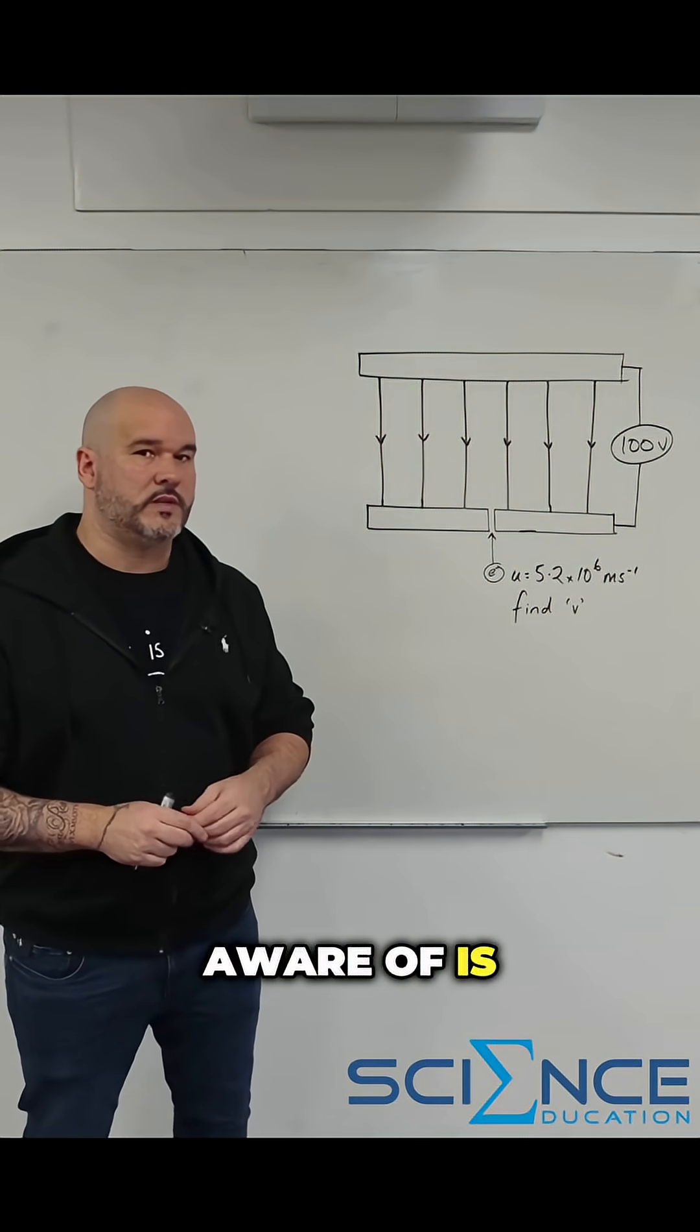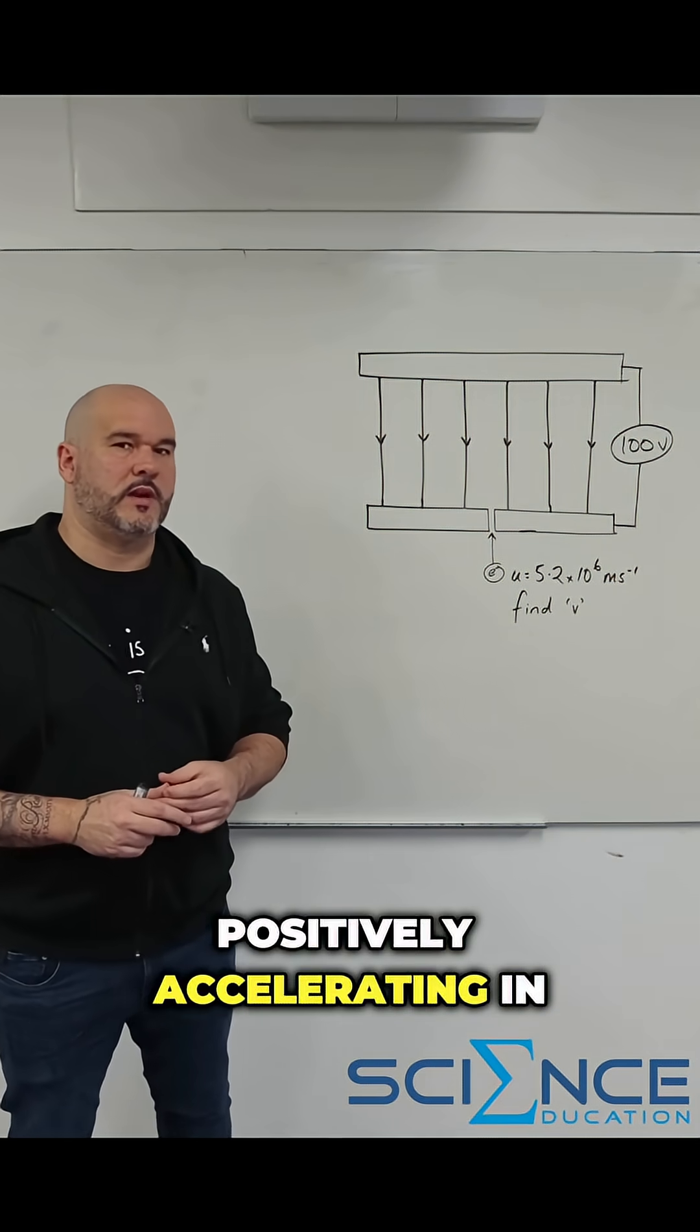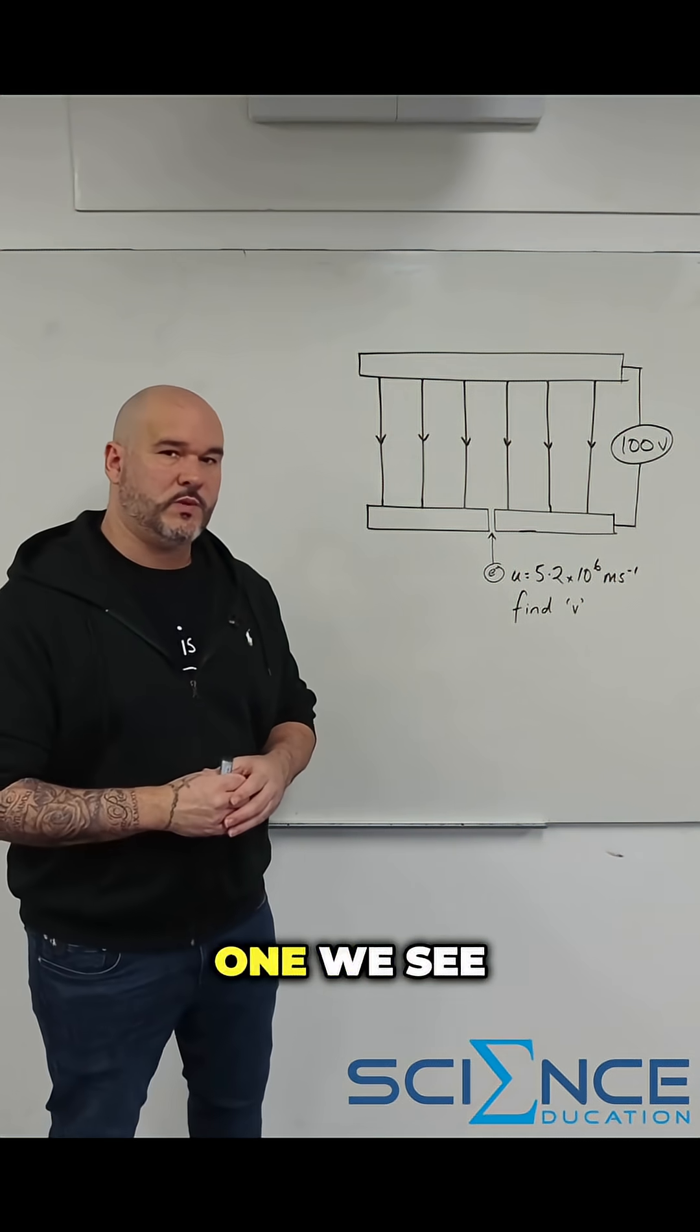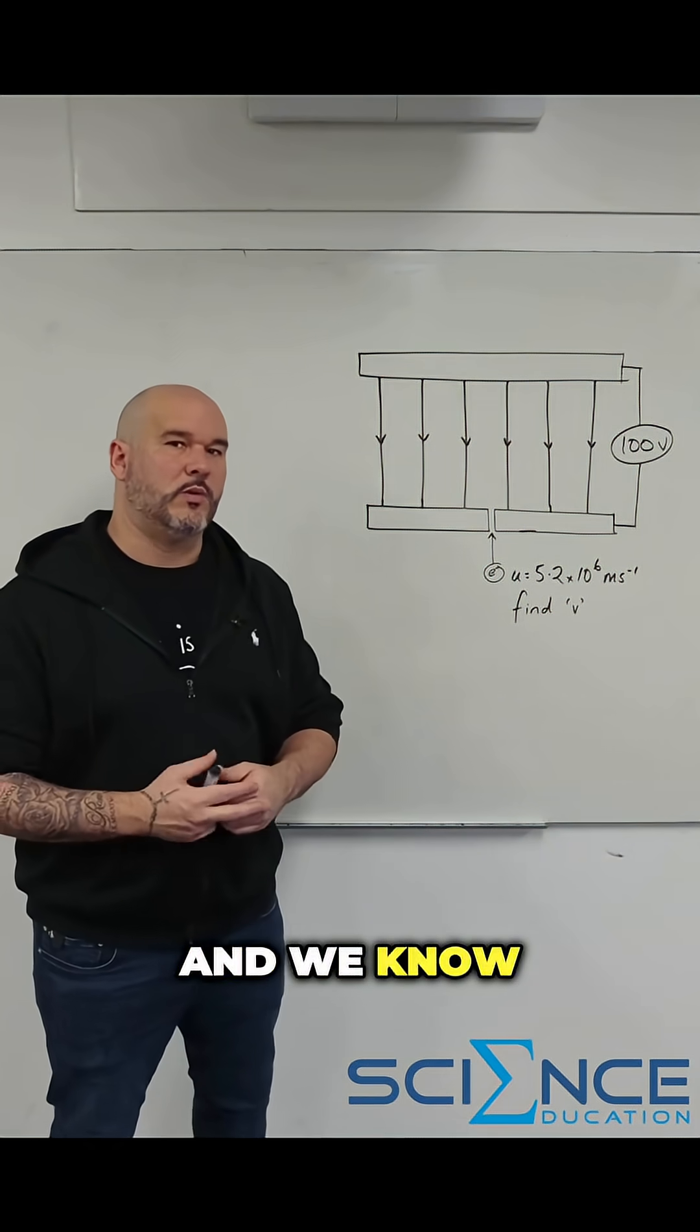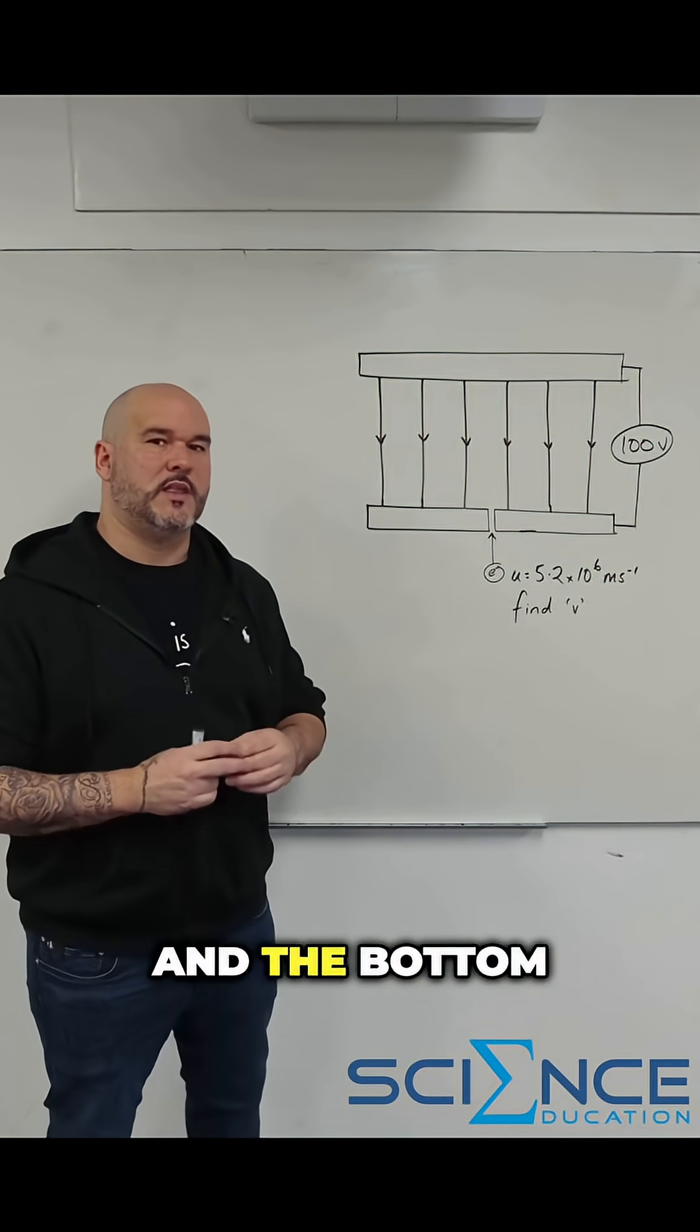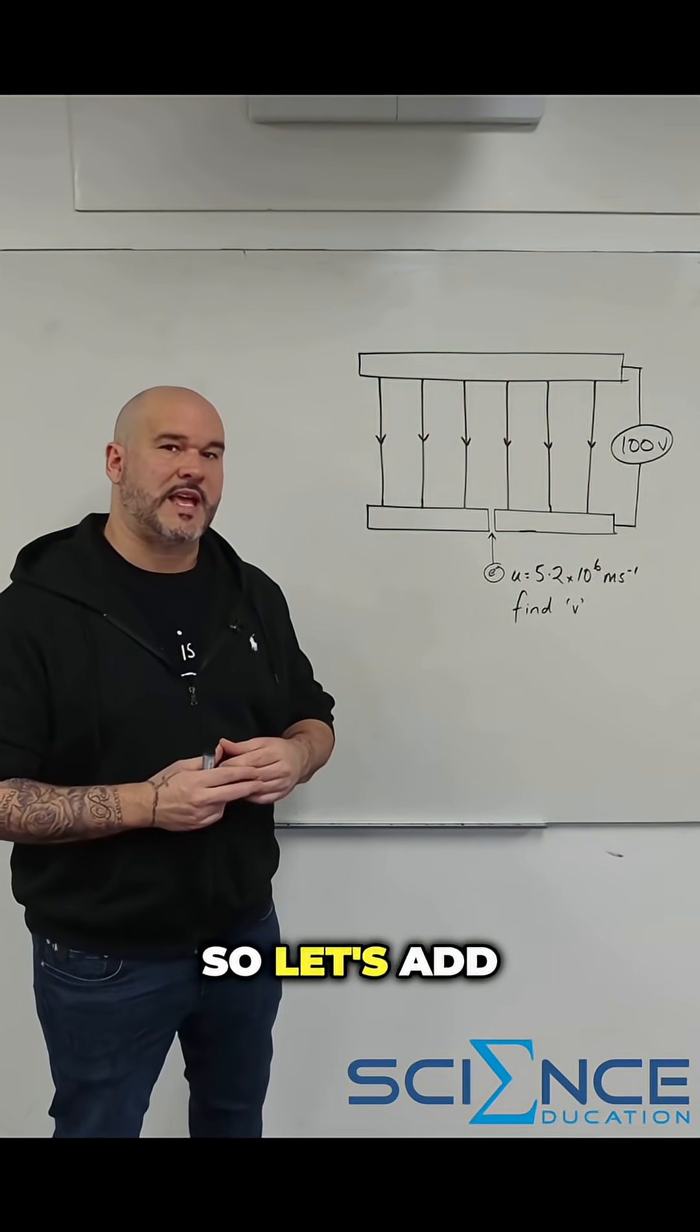First thing you need to be aware of is, is the electron positively accelerating in the electric field or is it negatively accelerating? For this one we see the electric field running from the top to the bottom and we know electric field lines run from positive to negative. That means the top plate is positively charged and the bottom plate is negatively charged. So let's add that in the diagram.